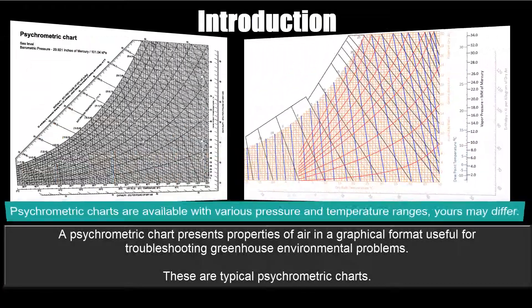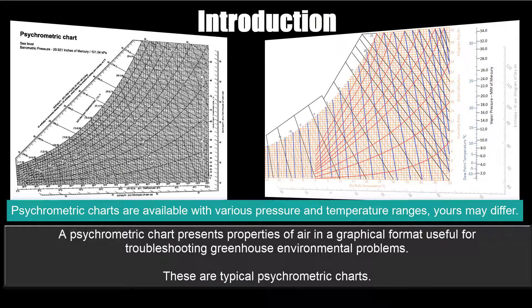Introduction. A psychrometric chart presents properties of air in a graphical format useful for troubleshooting greenhouse environmental problems. These are typical psychrometric charts. Psychrometric charts are available in various pressure and temperature ranges. Yours may differ from the examples here.